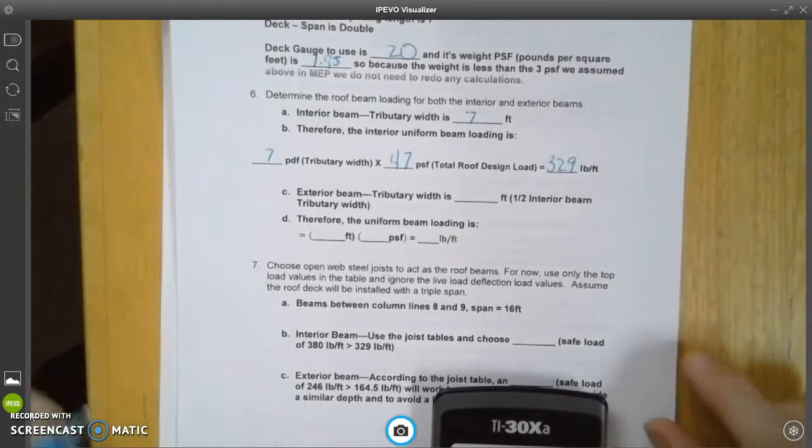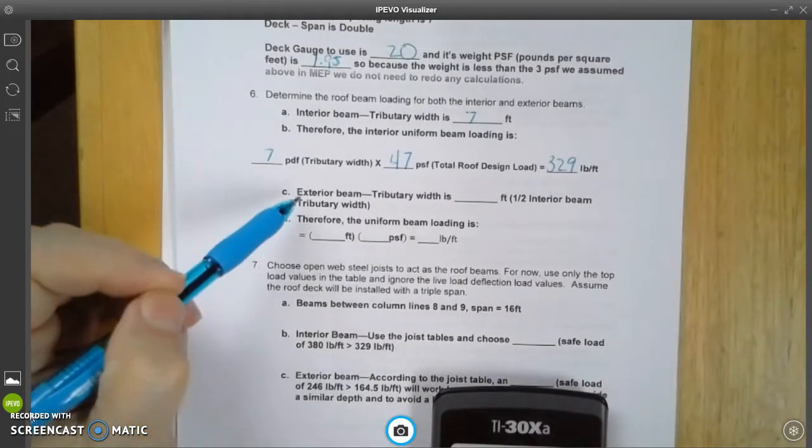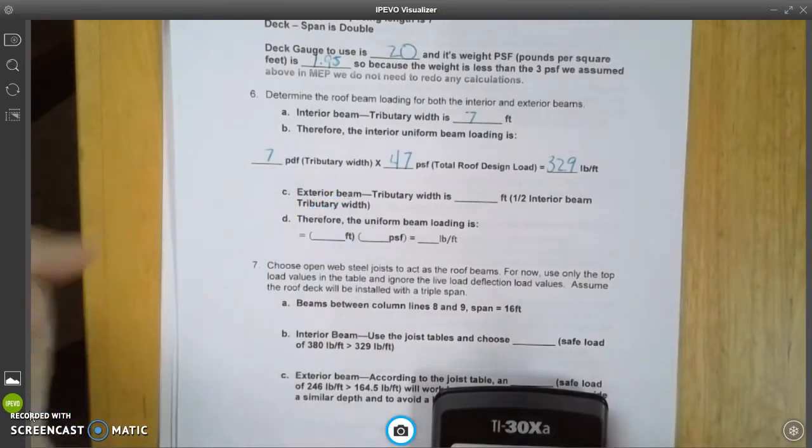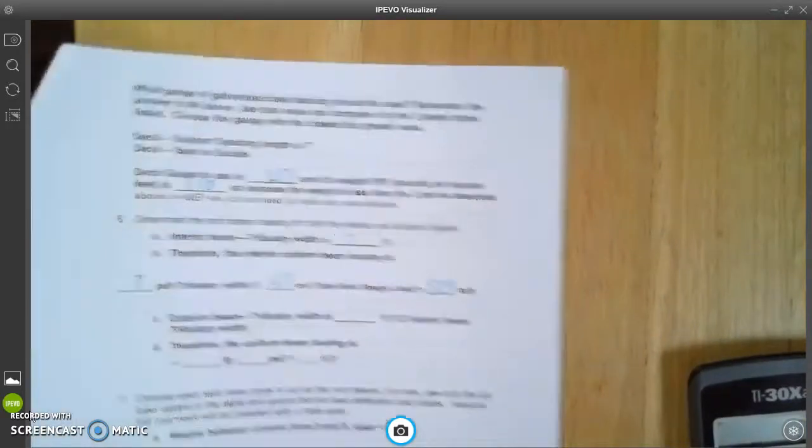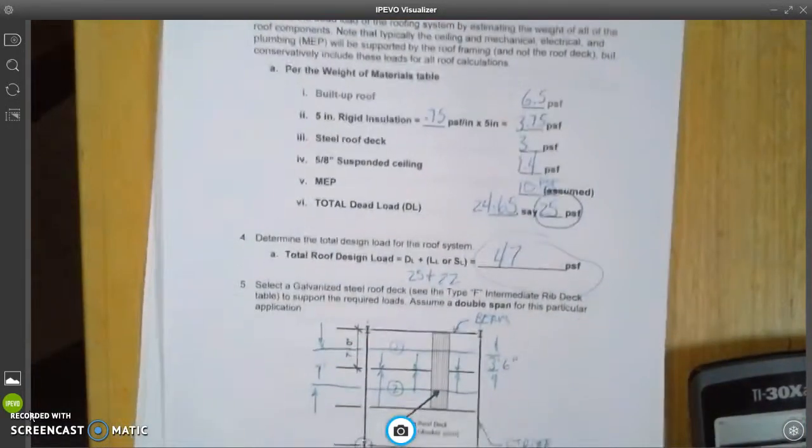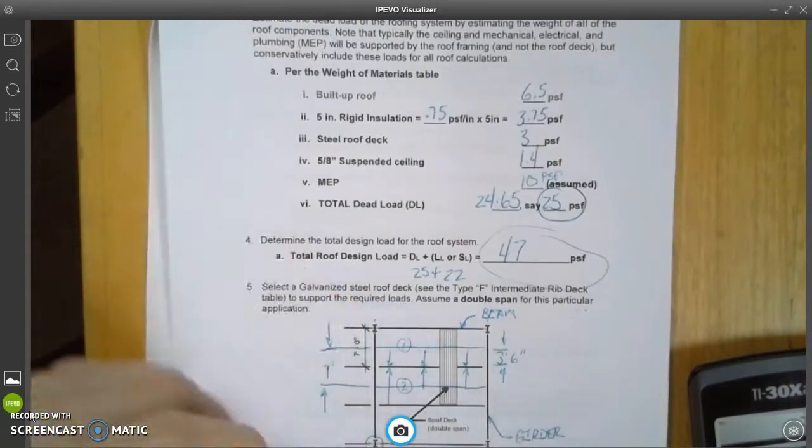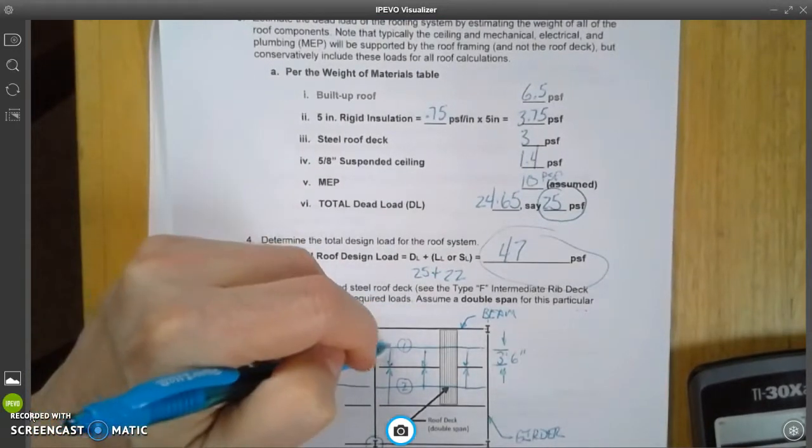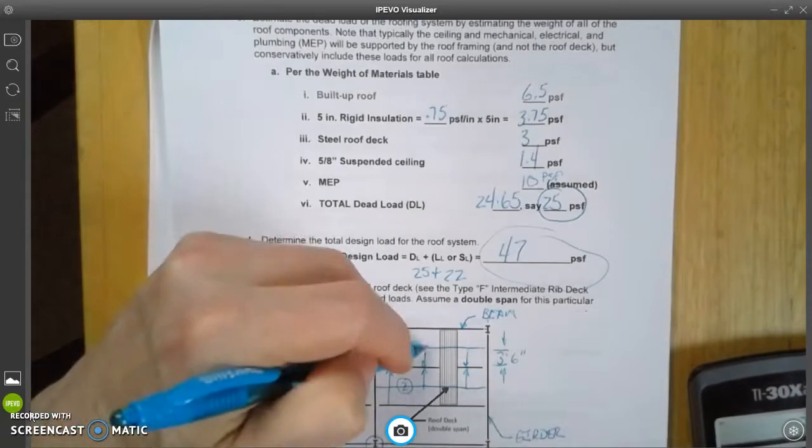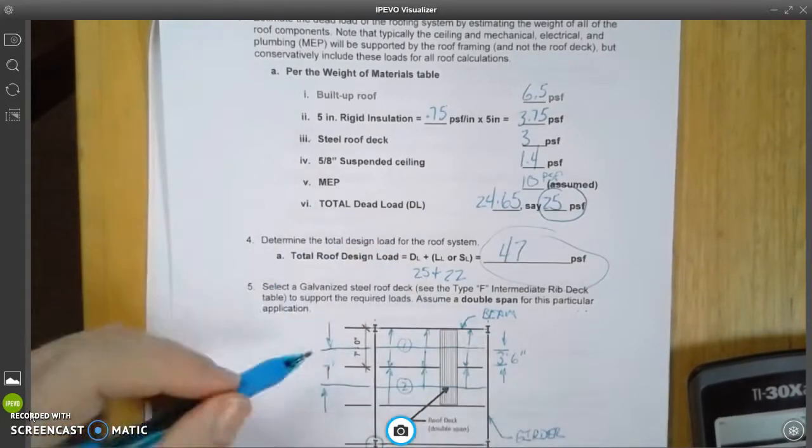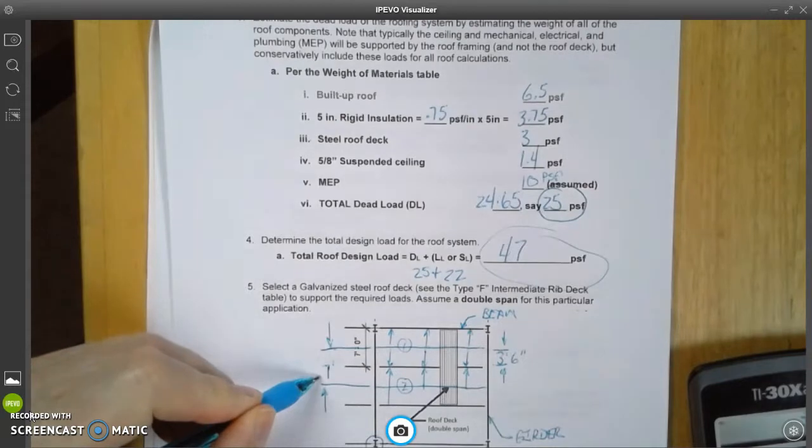Now, the next one down is an exterior beam, and an exterior beam is right here, but its tributary area is only one half of the interior beam's.